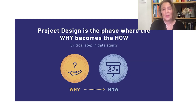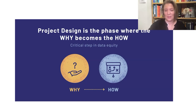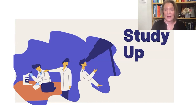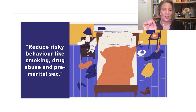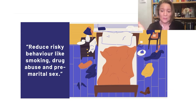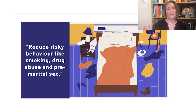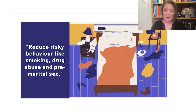Some people had to decide why and how that data set would come into existence. For example, there is a research report that turned into a data story showing that risky behaviors were being reduced in certain communities. The risky behaviors included smoking, drug abuse, and premarital sex.